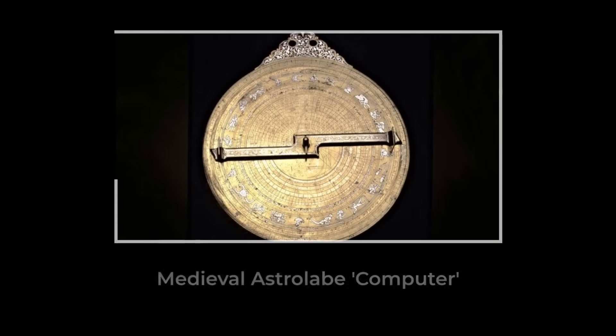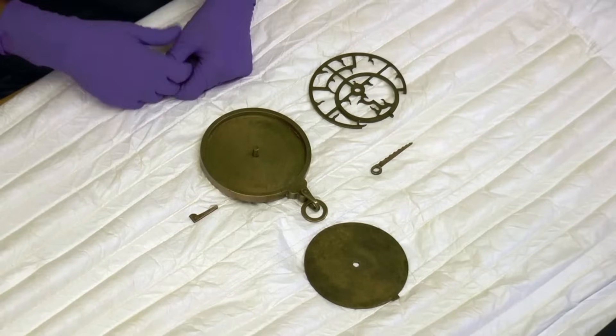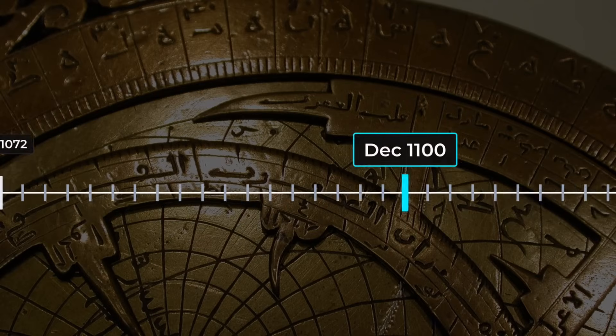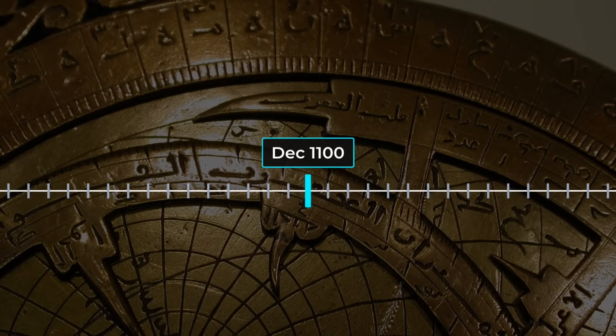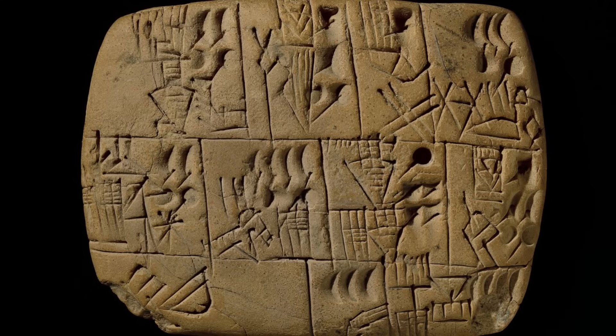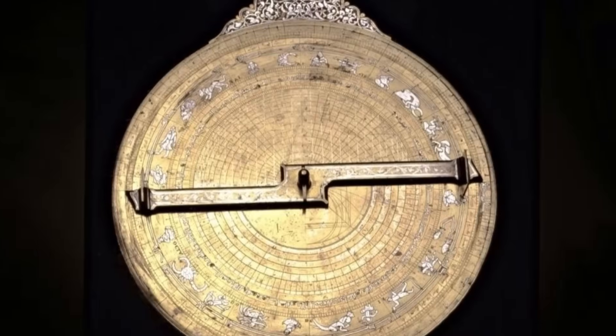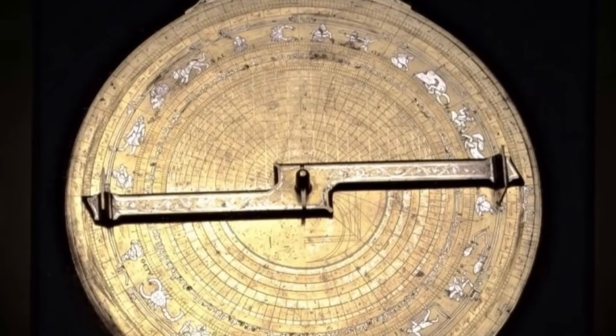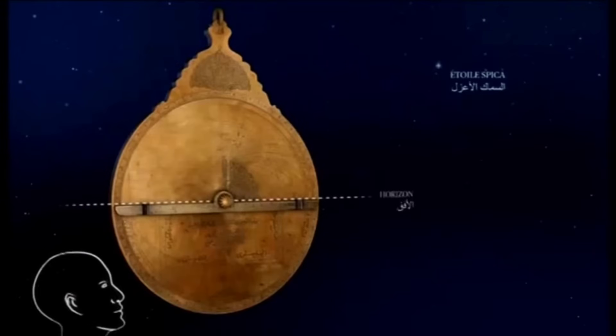The astrolabe, a brass disc etched with circles and lines, became the astronomer's computer. Its rotating plates let you read off the time of night or the altitude of a star, all calibrated in sexagesimal units. Some surviving astrolabes from the 10th and 11th centuries still bear the marks: sixty divisions around the rim, each tick a direct echo of Babylonian and Greek practice. These instruments weren't just for scholars. They set prayer times, guided caravans, and kept mariners on course across the open sea.